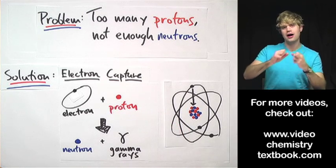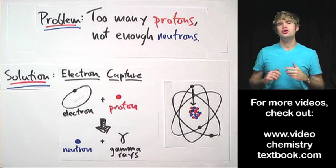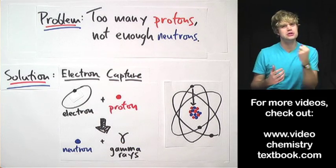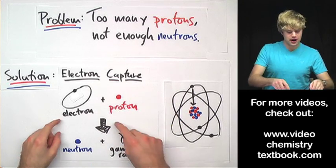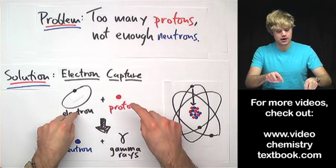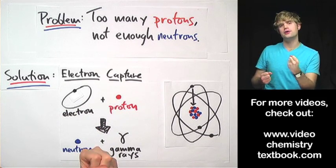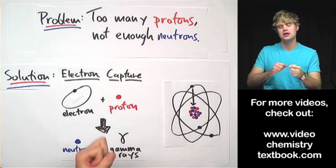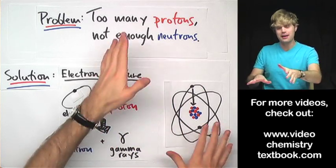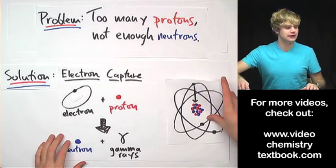Gamma rays are high energy waves that come out of the atom. You can think of them as kind of like exhaust or like heat from a fire. This process, combining an electron and a proton together to make a neutron, makes a lot of energy, and a lot of that extra energy gets released as these high energy gamma rays that come out of the atom. So that is electron capture.